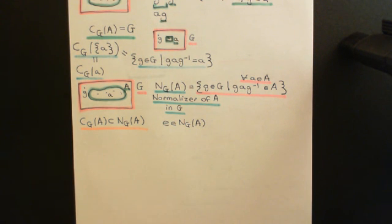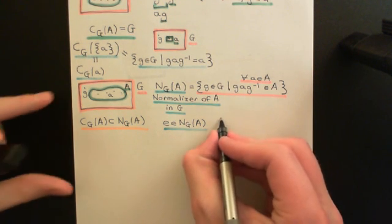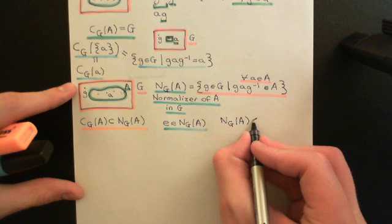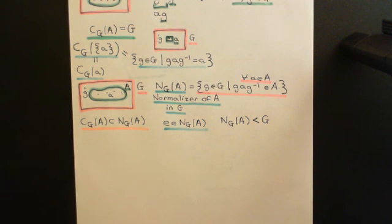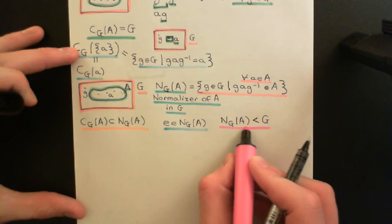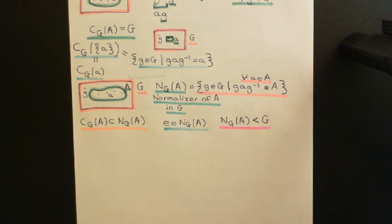The next claim is that this subset of G — the normaliser of A in G — is a subgroup of capital G. It's a special subcollection of elements of capital G that obeys the axioms of group theory on its own. Our next challenge is to prove that the normaliser of the subset capital A in the group capital G is in fact a subgroup. We'll take a break here and do that proof in the next video.